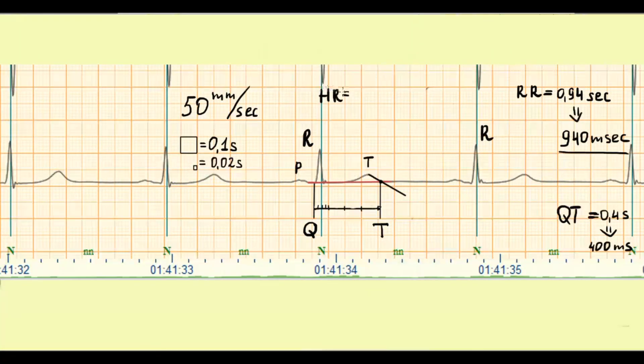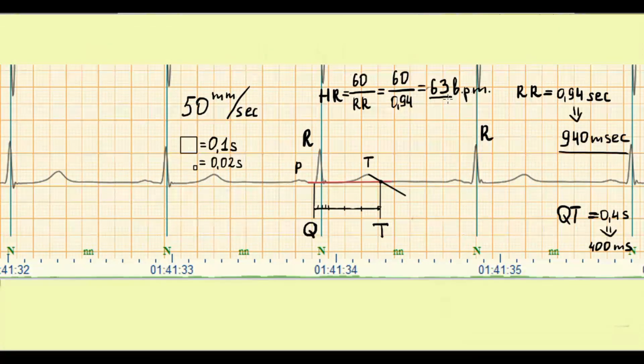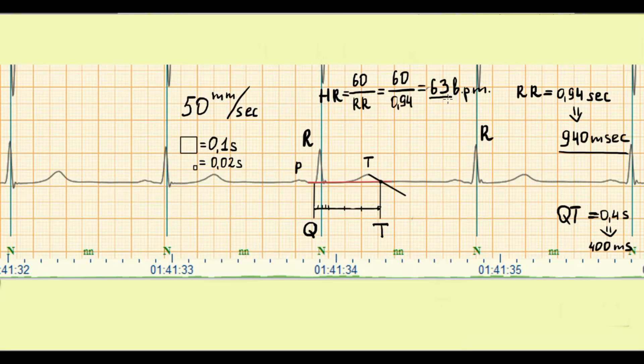For calculation of the heart rate, 60 divided by the RR interval in seconds. Heart rate is 63 beats per minute. But now you don't need to use math every time when you want to calculate QTc.